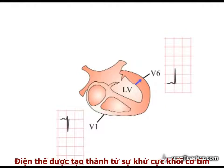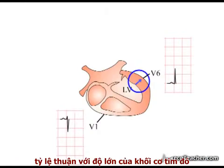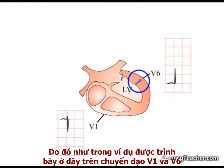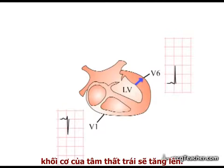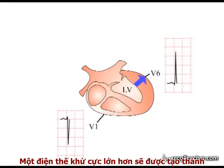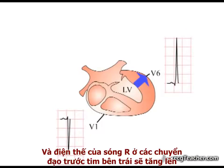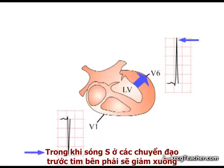The voltage developed by depolarizing cardiac muscle is proportional to the mass of muscle present. Therefore, as exemplified in leads V1 and V6, during the process of hypertrophy, as the left ventricular muscle mass increases in bulk, greater depolarization voltages are produced in the thickened wall. The amplitude of the R wave in the left lateral leads becomes progressively higher, while the S waves in the right-sided chest leads become progressively deeper.